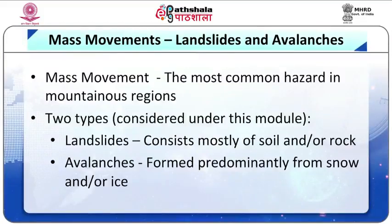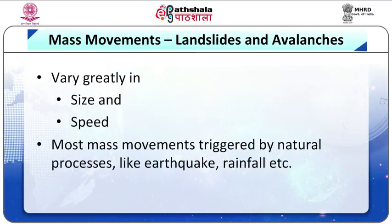Let us first understand the concept of disaster management. In many mountainous environments, the most common hazard is mass movement — the displacement of surface material downslope under the force of gravity, occurring in almost any environment where slopes are present. Both landslides and avalanches are types of mass movements. Landslides consist mostly of rock and soil, and snow avalanches are formed predominantly from snow or ice. These movements vary greatly in size, ranging from a few cubic meters to over 100 cubic kilometers, and in speed, ranging from millimeters per year to hundreds of meters per second. They are responsible for large amounts of damage, with rapid mass movements generally causing the greatest loss of life, but slower movements causing most of the long-term costs.